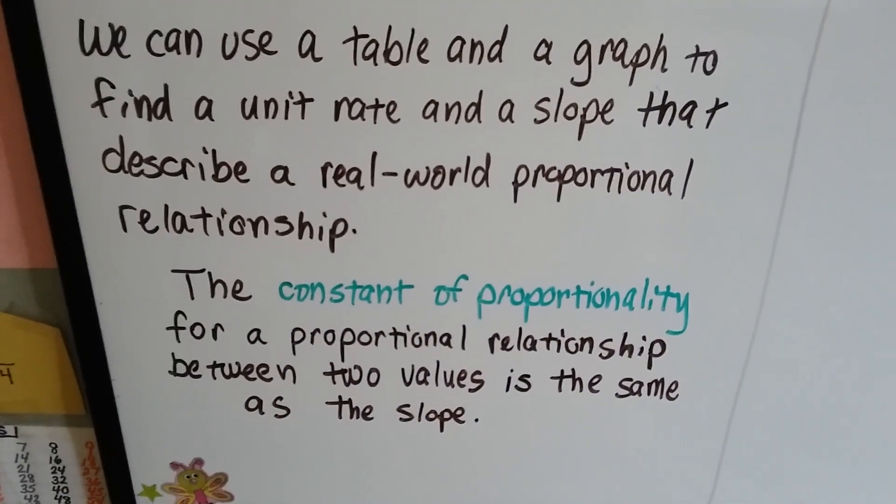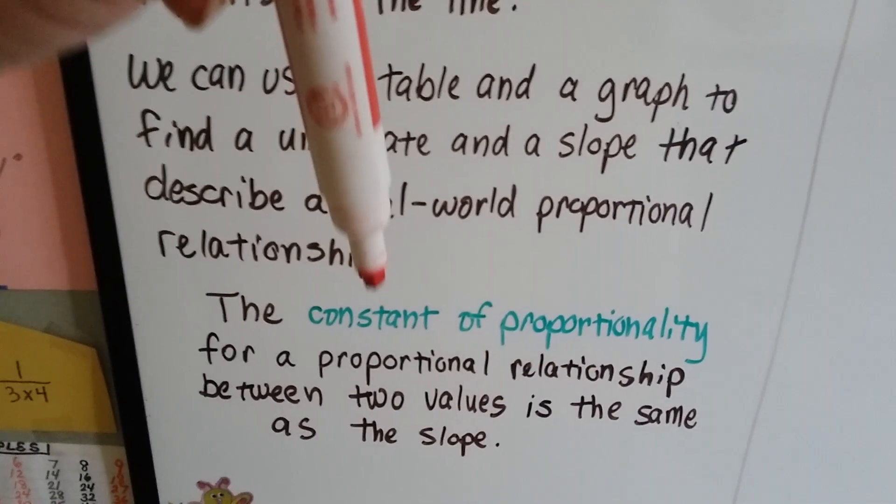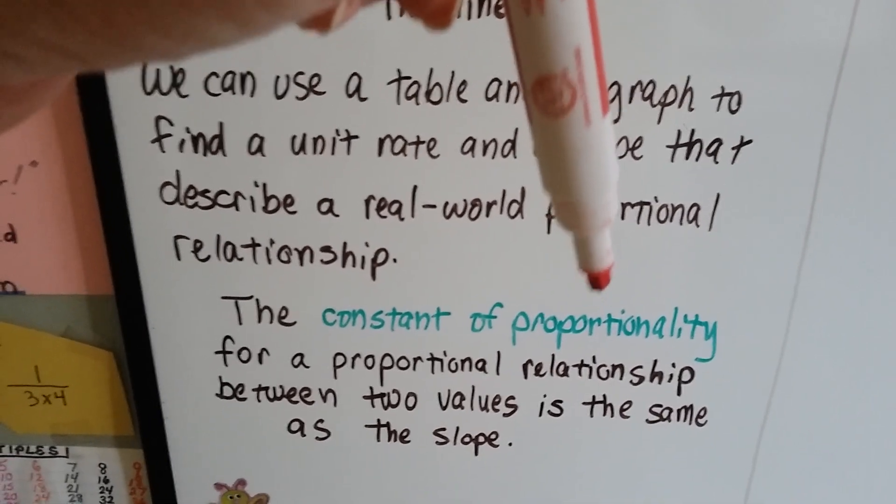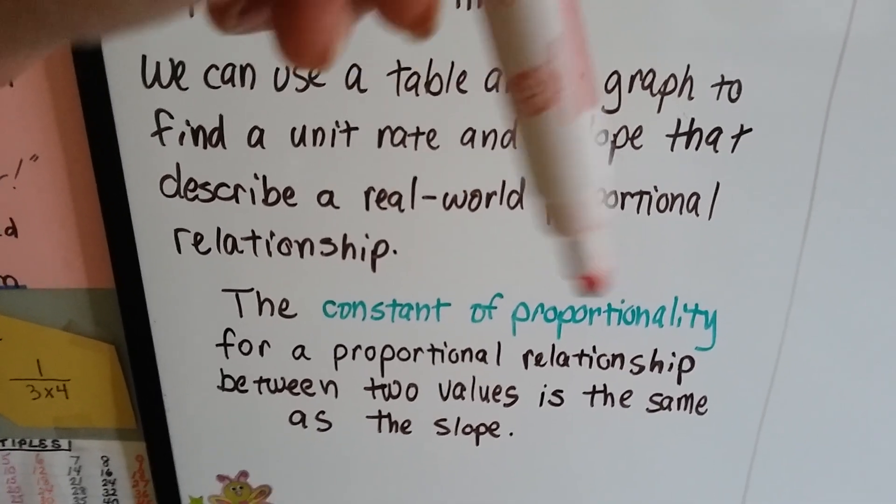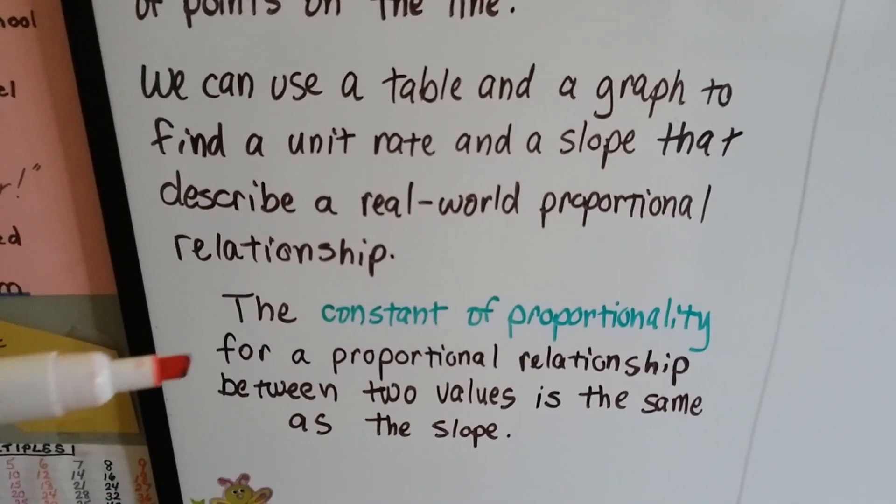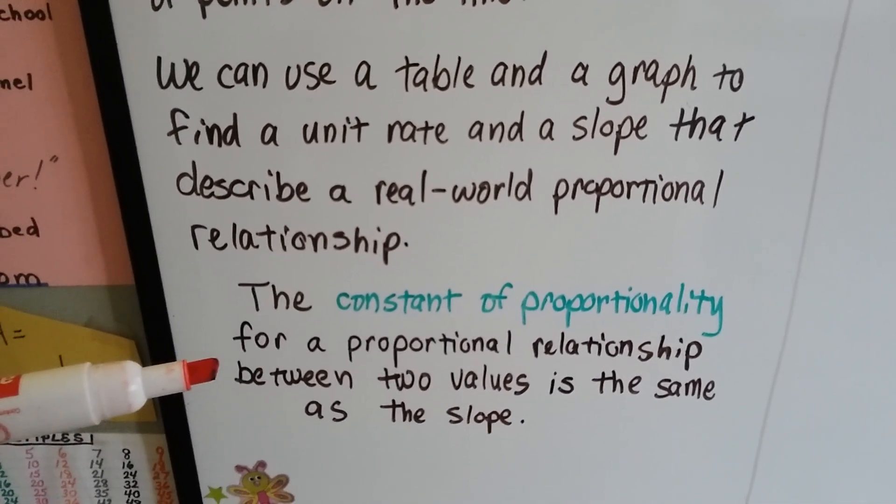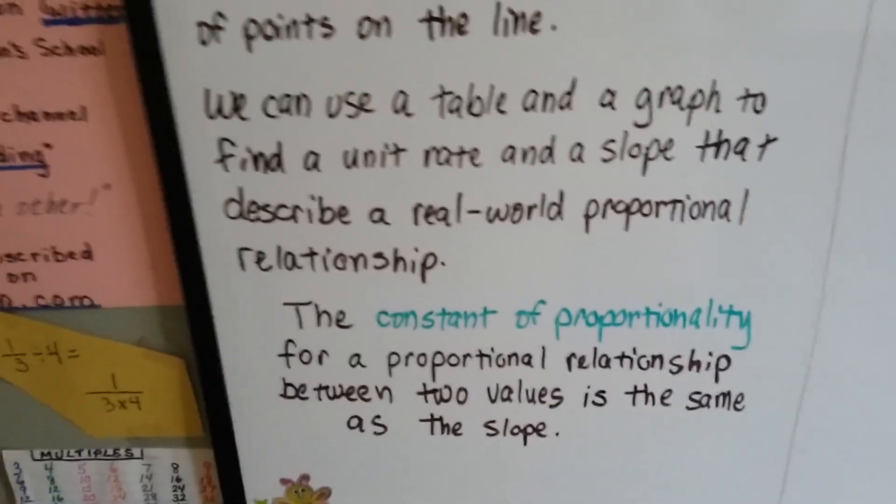And the constant of proportionality, constant means it's not going to change, and proportionality is the proportion ratio, so it's a ratio that doesn't change. Well, for a proportional relationship between two values, it's the same as the slope.